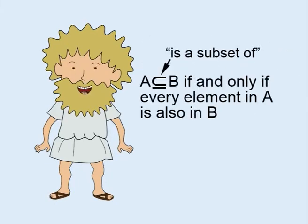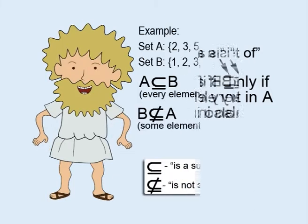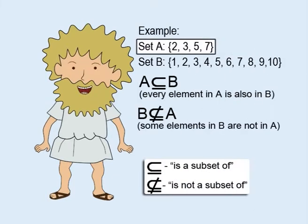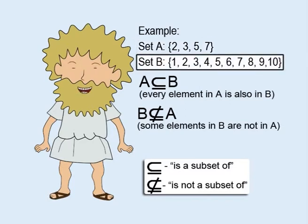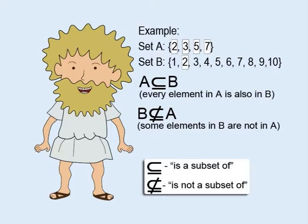A set A is a subset of a set B, if and only if every element in A is also in B. For example, the set A of prime numbers between 1 and 10 is a subset of set B of natural numbers from 1 to 10, because each element in A is also in B.